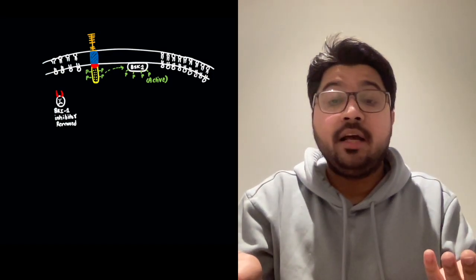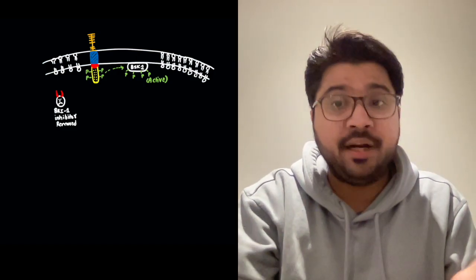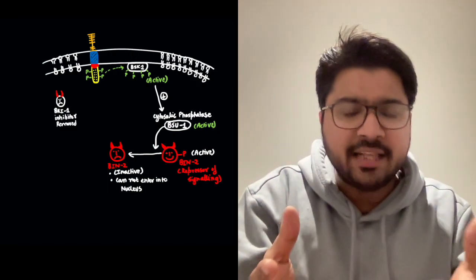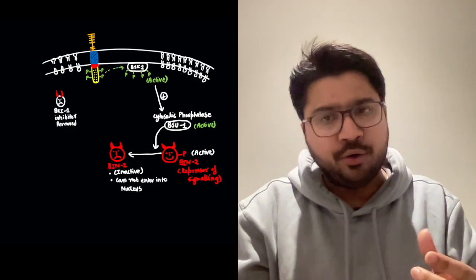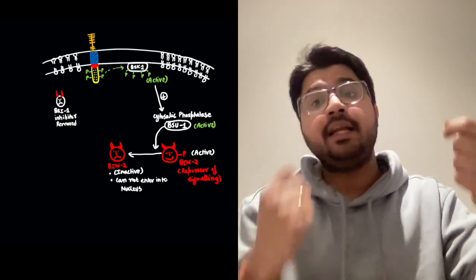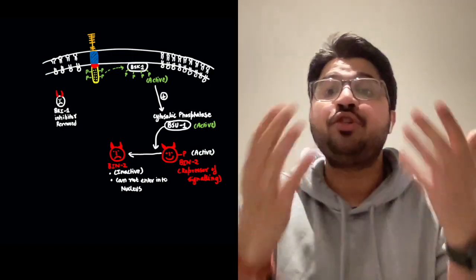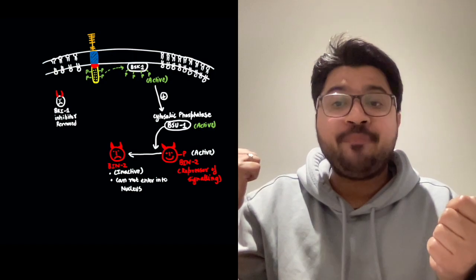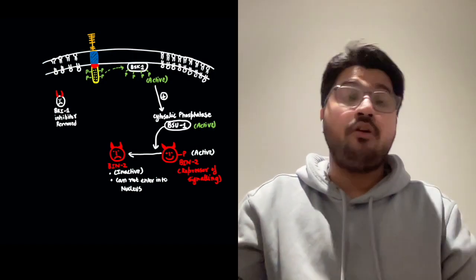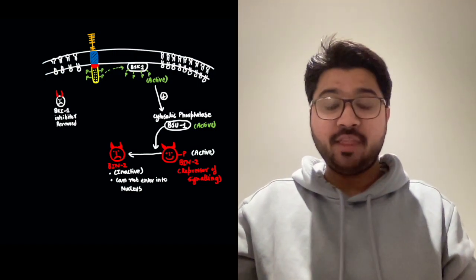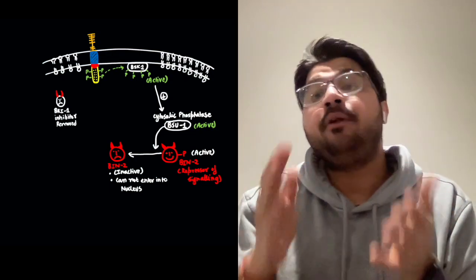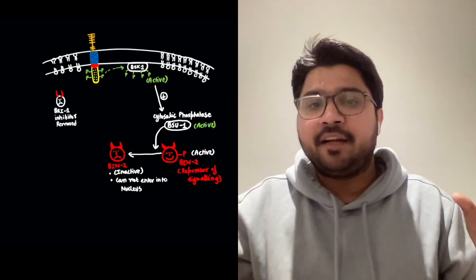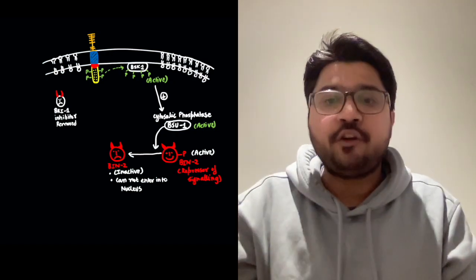Once BSK1 is phosphorylated and activated, it in turn activates a cytosolic phosphatase called BSU1. BSU1 was revolving in the cytosol; upon contact with phosphorylated BSK1, it becomes active. This phosphatase BSU1 then acts upon BIN2 — which was phosphorylated and active in the cytosol — and removes its phosphate, inactivating BIN2.